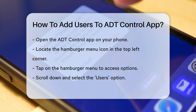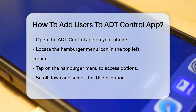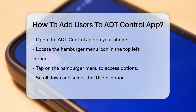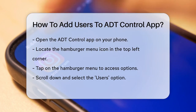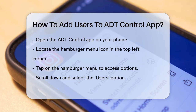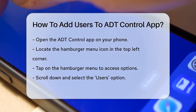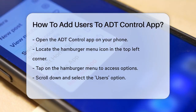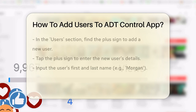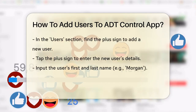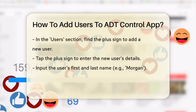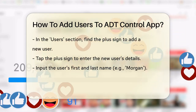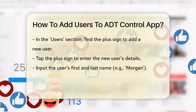First, make sure you have the ADT Control app open on your phone. You'll see a hamburger menu icon in the top left corner — that's where you'll start. Tap on this icon to open the menu, and then scroll down to the Users option.